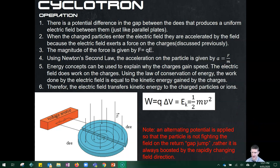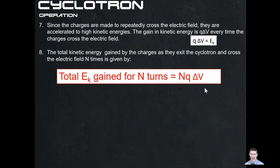It's important to know that the alternating potential is applied so that the particle is never fighting the field on the return. Otherwise, although it's accelerated one way, when it whizzes back around it would be fighting the field and slow down. So the potential difference is alternated strategically so that every time the particle comes back it's in the right direction — it flips and then the particle is again moving in the right direction. It's constantly accelerating and never fighting the electric field direction.